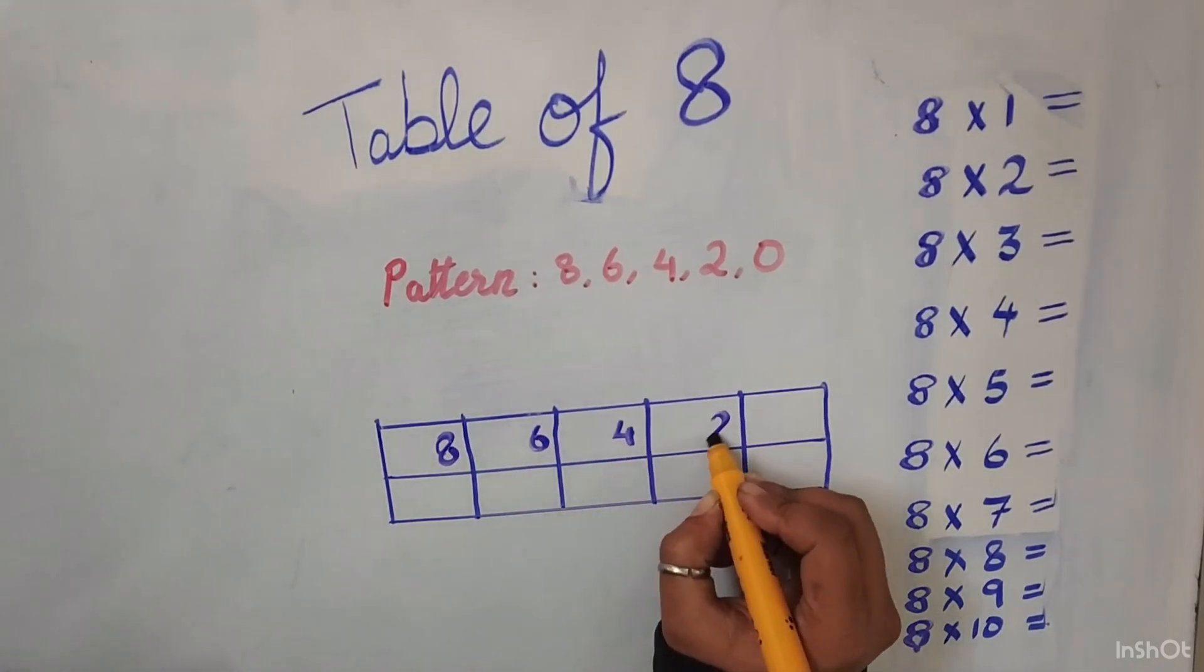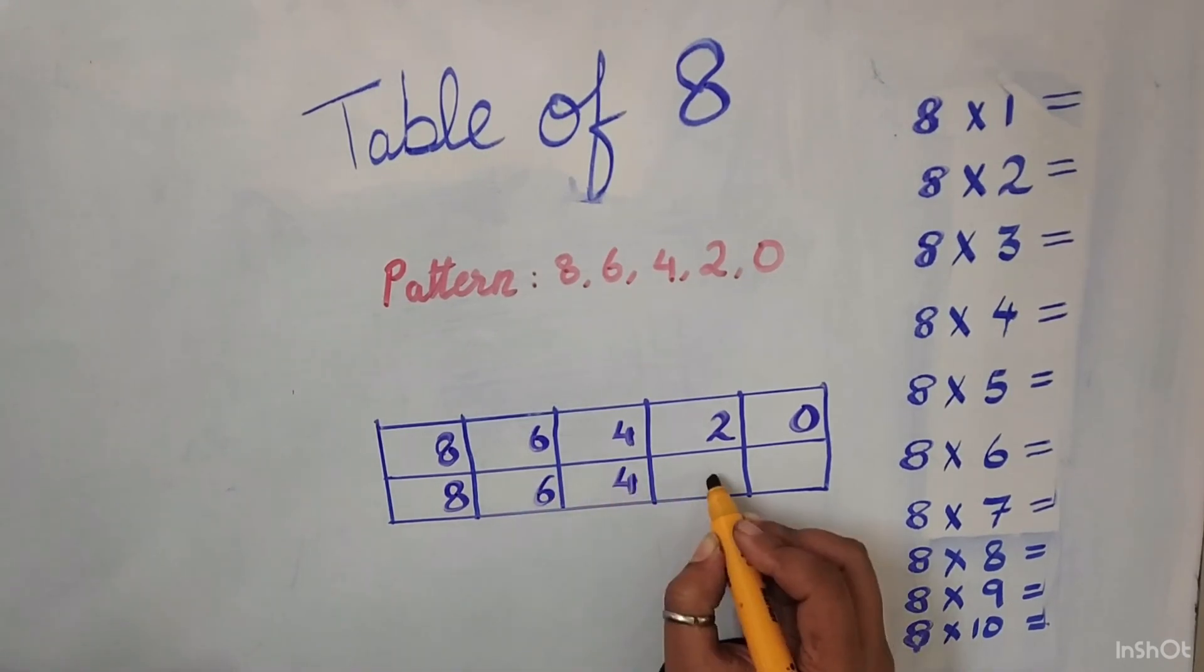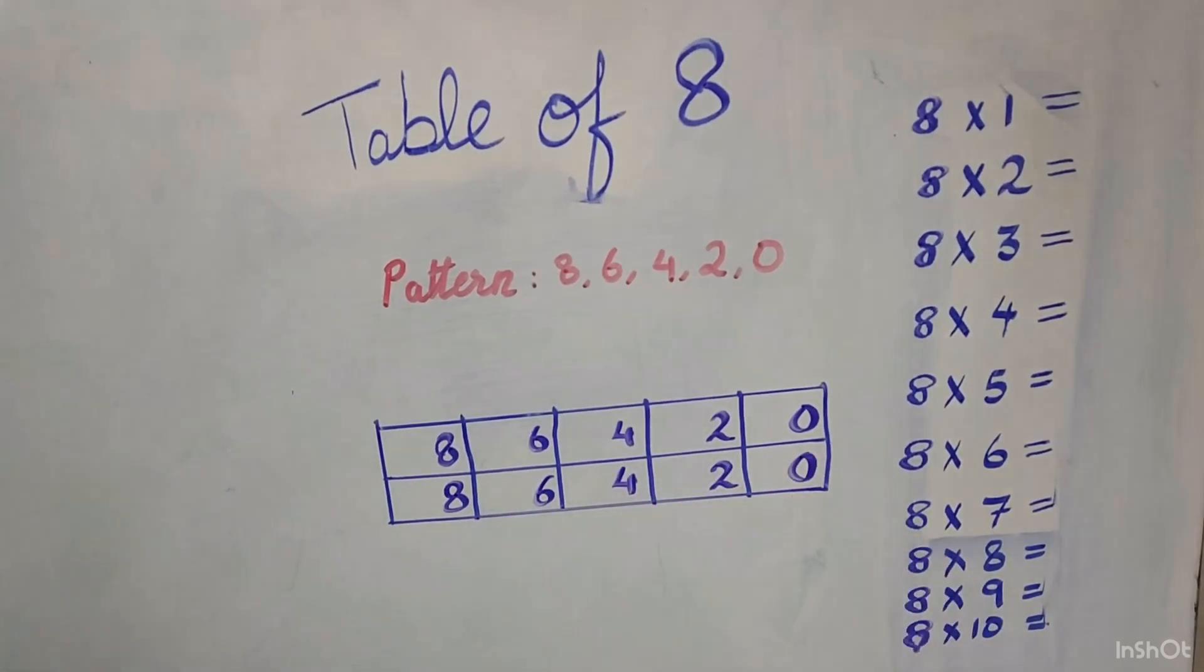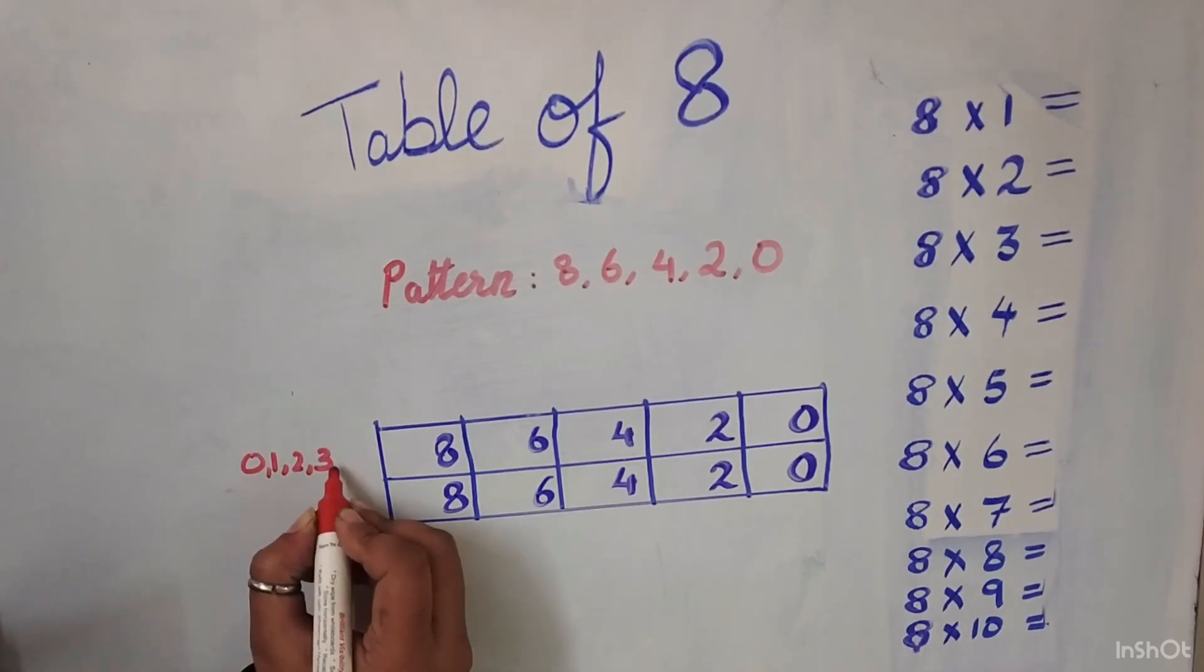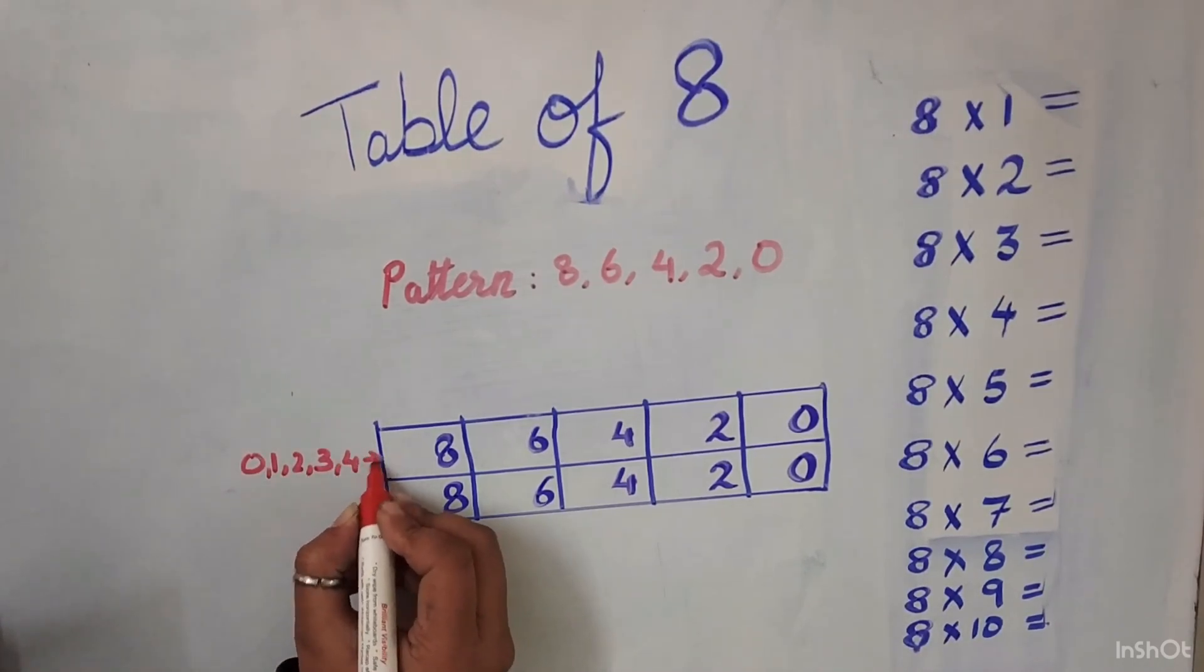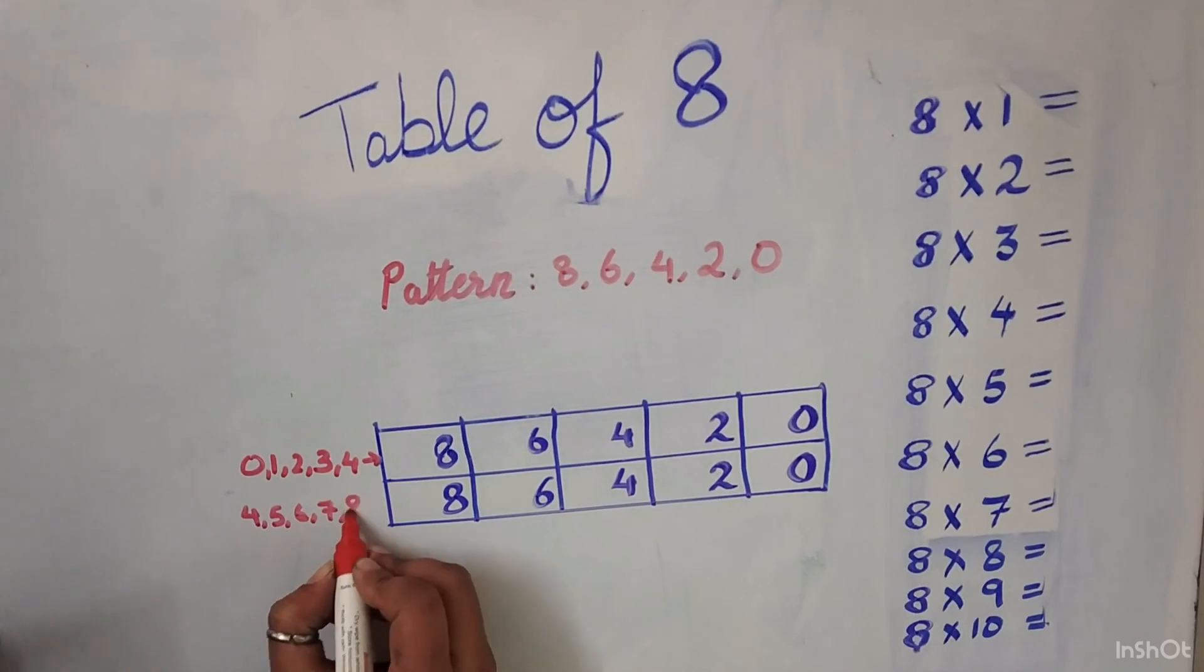Let us put the pattern in the table below: 8, 6, 4, 2 and 0. We will repeat it again: 8, 6, 4, 2 and 0. The magic numbers for the first row are 0, 1, 2, 3 and 4. For the second row, we start with 4 again: 4, 5, 6, 7 and 8.